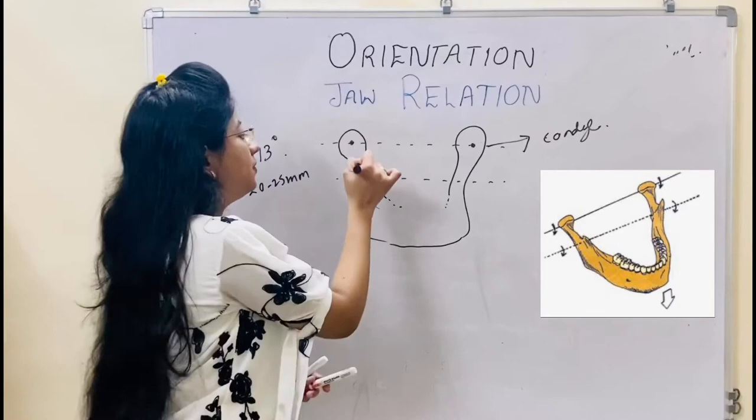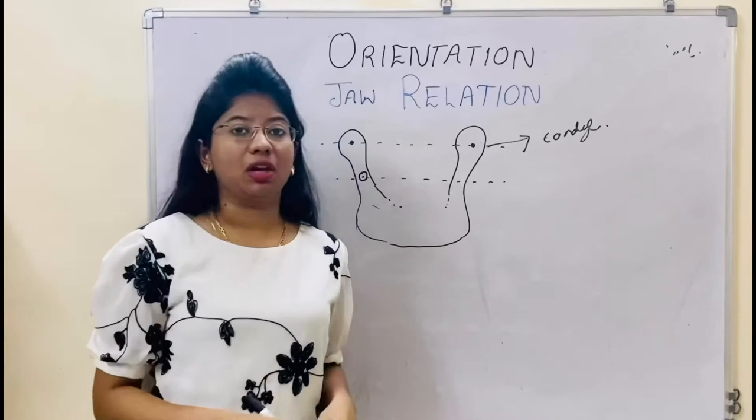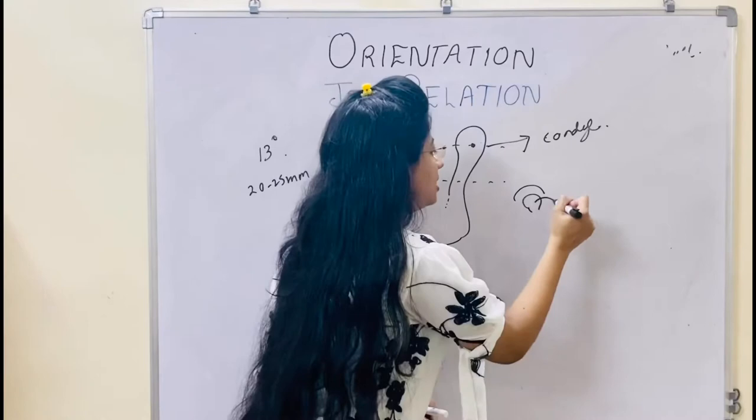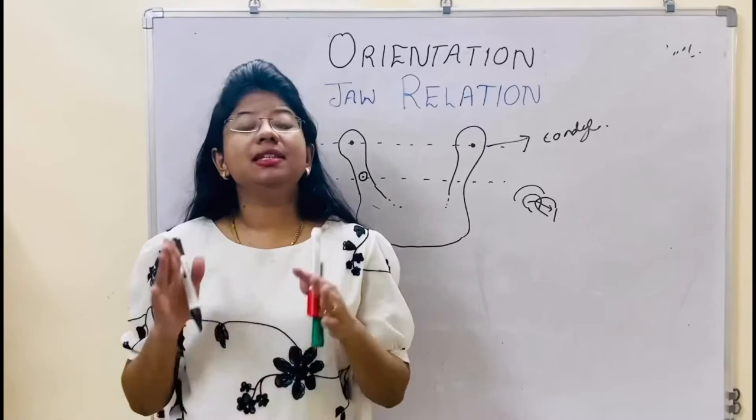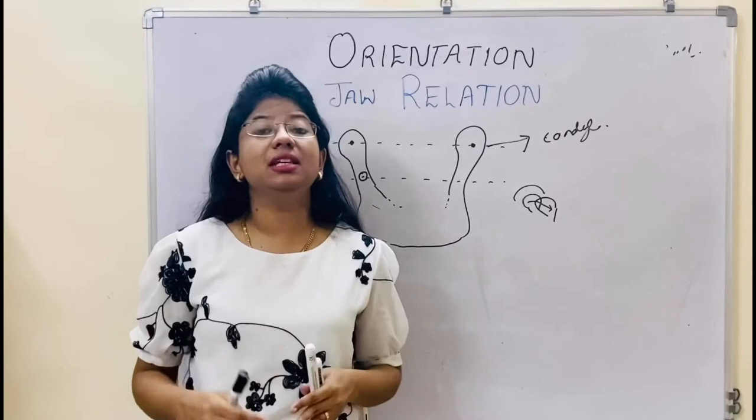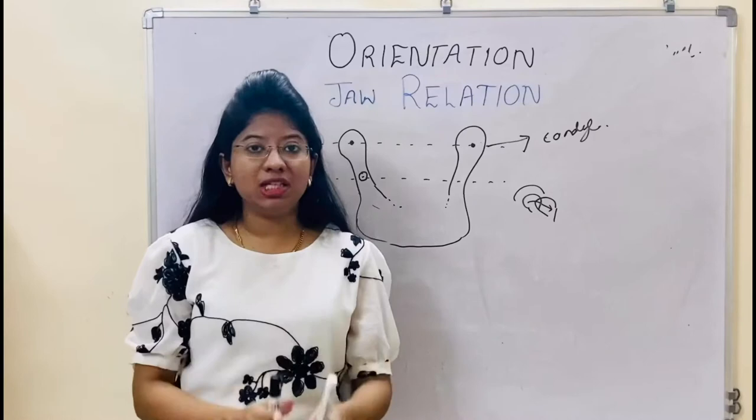This axis of rotation shifts from the condyles to the mandibular foramen during translation. Rotation is at the same place, and when there is a change of place, there is translation. So when there is a change of position, there is also a change of axis. The terminal hinge axis is the hinge axis present when the mandible is in the most posterior position.